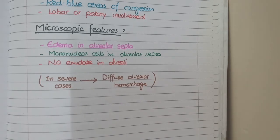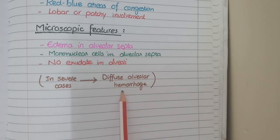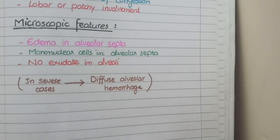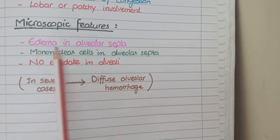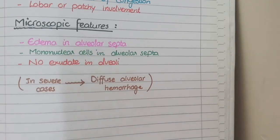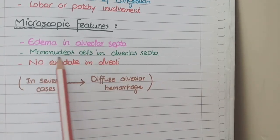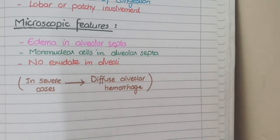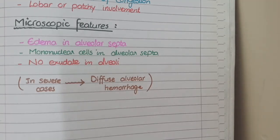In a few exceptional cases, viral pneumonia becomes so severe that there is diffuse alveolar hemorrhage, but this is rare. Overall, on microscopic examination of viral pneumonia, you see edema confined to the alveolar septa and not present in alveolar spaces, mononuclear cells (lymphocytes and macrophages) in the alveolar septa without neutrophils, and no exudate in the alveoli — as the changes occur at the level of alveolar septa. This concludes our discussion on the pathological features of pneumonia.